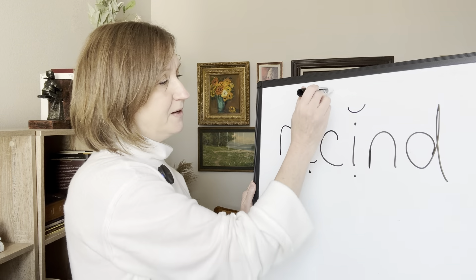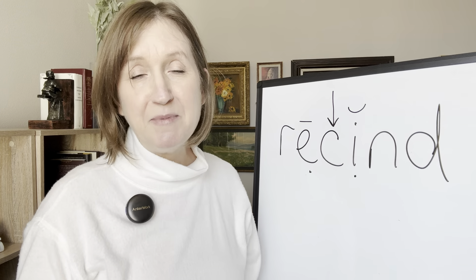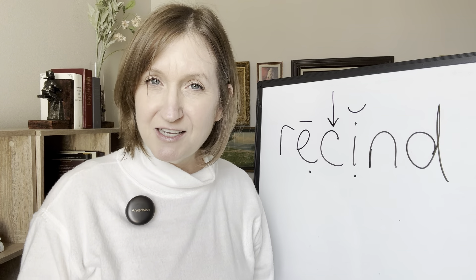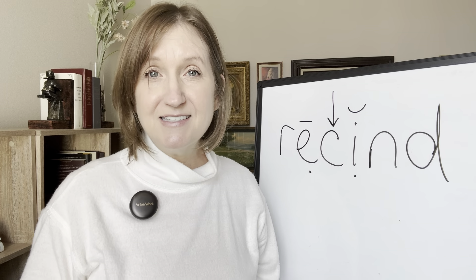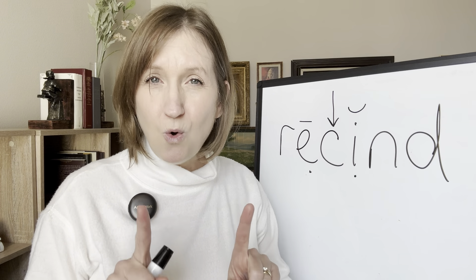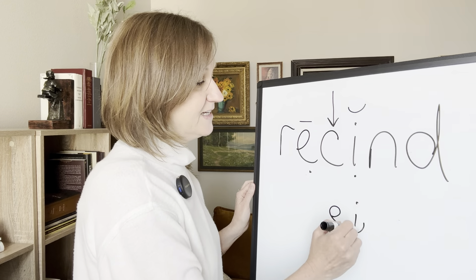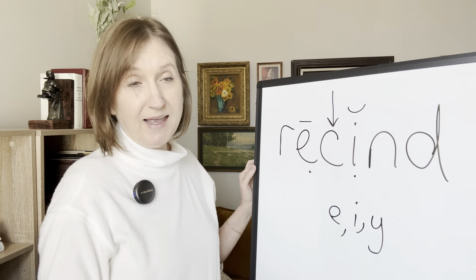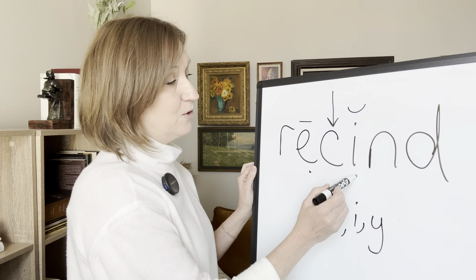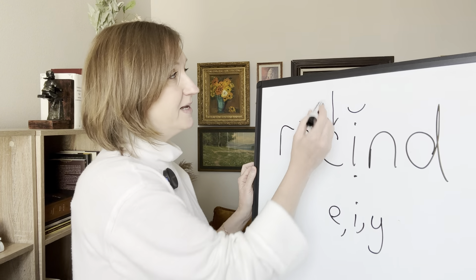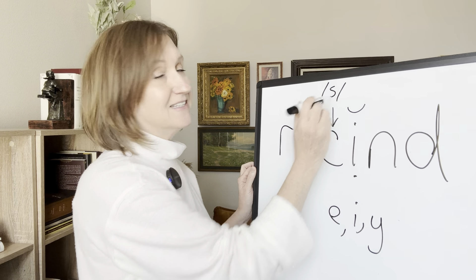Now what about this c? C has two sounds. It can make its hard sound, k, which it does usually, or its soft sound, s, which it will only do if the very next letter is an e, i, or y. We do have an e, i, or y right after it, so it is going to make its soft sound and say s.